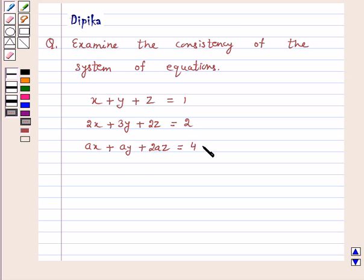Let's start the solution. We know that a system of equations is said to be consistent if its solution exists and a system of equations is said to be inconsistent if its solution does not exist. So we will see whether its solution exists or not.